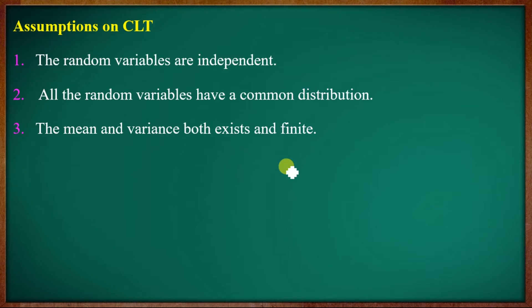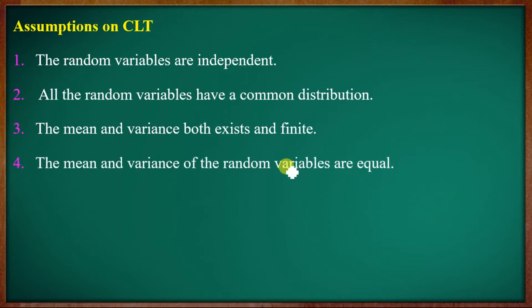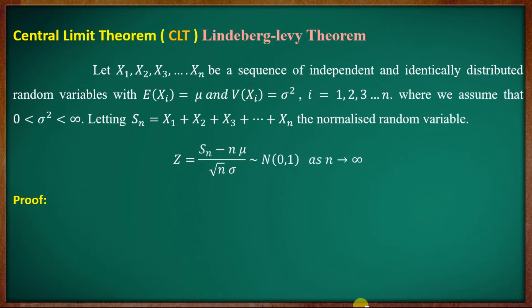It is the Central Limit Theorem. Fourth, the mean and variance of the random variables are equal. The Central Limit Theorem is a statement related to the standard limit theorem, which comes from the following formal statement.